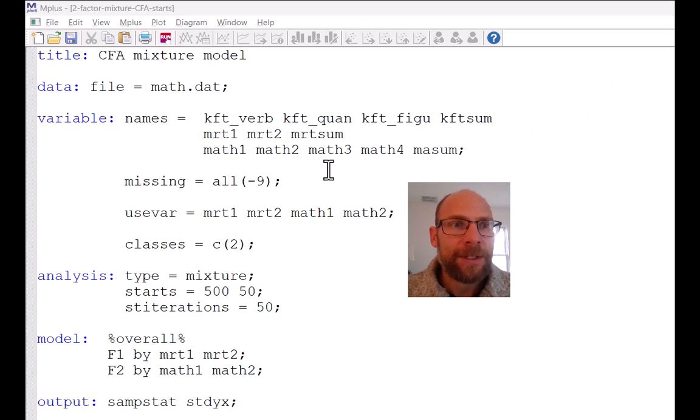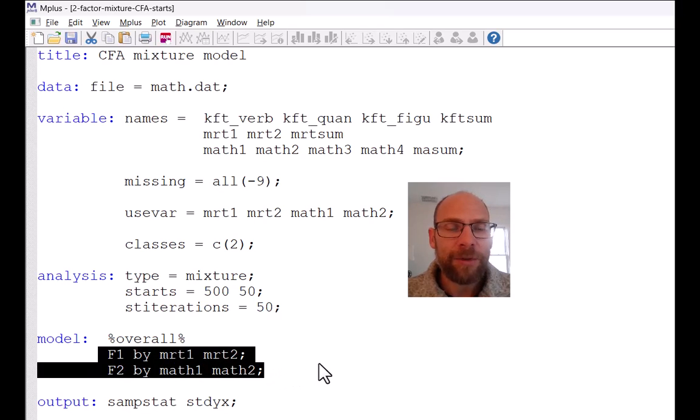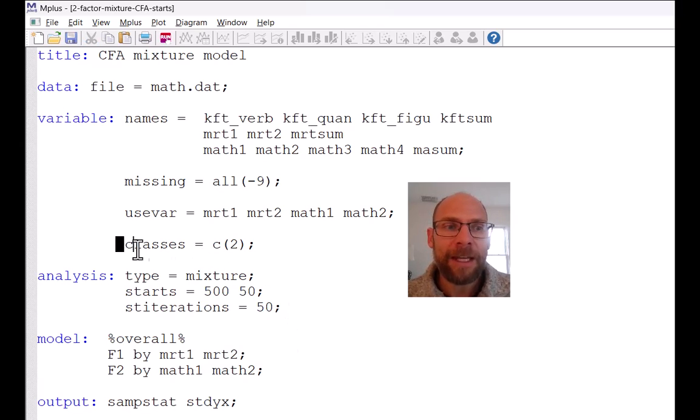When you take a look at this syntax here you can see that what we're doing is we're running a two-factor model. You can see two factors F1 and F2 here and they each have two indicators. Now what is different in this syntax file from a conventional Mplus syntax for a conventional confirmatory factor analysis is that here we have a specific subcommand under variable that specifies the number of latent classes to be extracted in this factor mixture model.